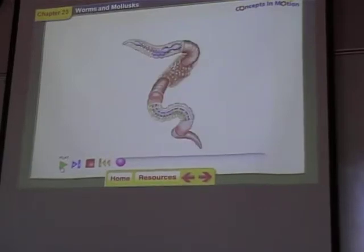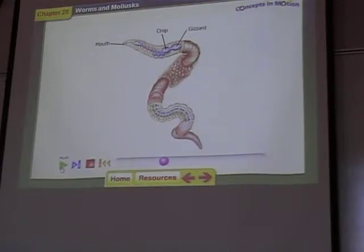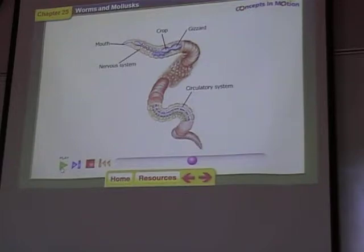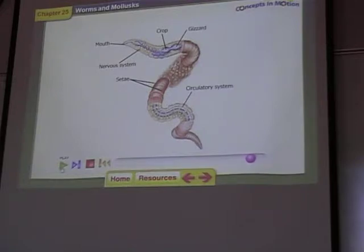An earthworm takes soil into its mouth — the beginning of the digestive tract. The crop is a sack that holds soil temporarily before it is passed into the gizzard. In the gizzard, a muscular sack and hard particles help grind soil and food before they pass into the intestine. The closed-circuit circulatory system consists of enlarged blood vessels that are heavily muscled. An earthworm has a system of nerve fibers in each segment connected by ventral nerve cords to a simple brain located near the mouth.